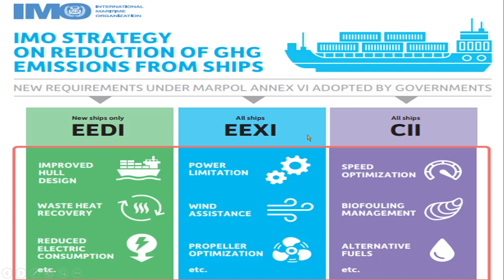How can we basically reduce this carbon emission? In EEDI they improved the hull design, focused on waste heat recovery, and reduced electrical consumption. But this was not sufficient. So they came up with EEXI. In EEXI, they are limiting the power so that emissions will be limited. They are also looking at renewable sources of energy, propeller optimization, and the CII.